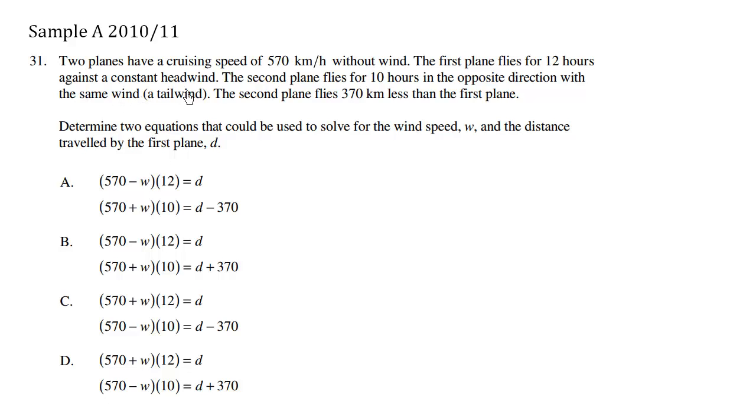Two planes have a cruising speed of 570 km per hour without wind. The first plane flies for 12 hours against a constant headwind. The second plane flies for 10 hours in the opposite direction with the same tailwind. The second plane flies 370 km less than the first plane. Determine two equations that could be used to solve for the wind speed w and the distance traveled by the first plane d.